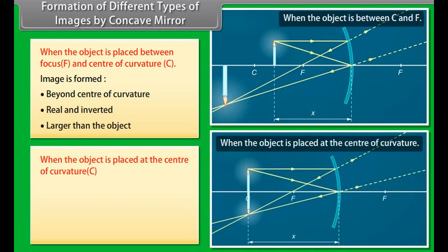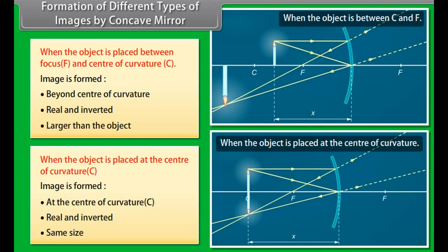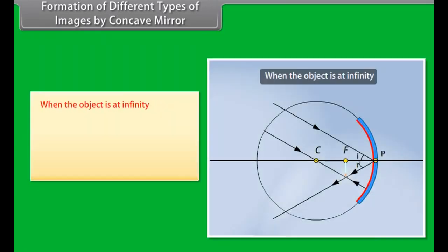When the object is placed at the center of curvature C, the image is formed at C — real, inverted, and same size. When the object is at infinity, the image is formed at the focus — real, inverted, and smaller than the object.